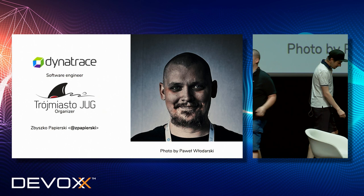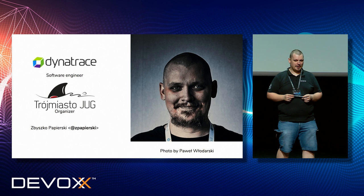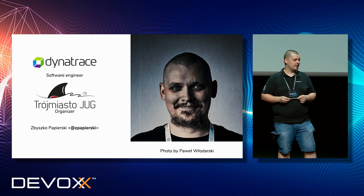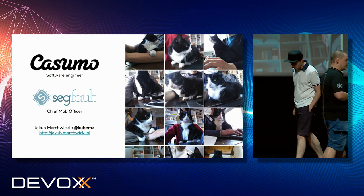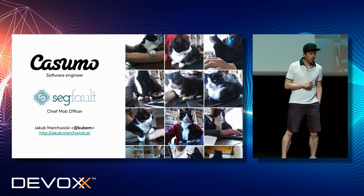Let's introduce ourselves. My name is Zbyszko. I always wanted to show my face on the big screen, so there it is. I work at DianTrace. I'm also one of the organizers of Tri-City JUG, which I highly recommend because it's the best JUG in Poland — of course, in the world. And my name is Jakub. I work for an online gaming company, Cosumo, but I also co-organize a conference called Seekfold. I work remotely, which you can judge by my cat photos on my Instagram page.